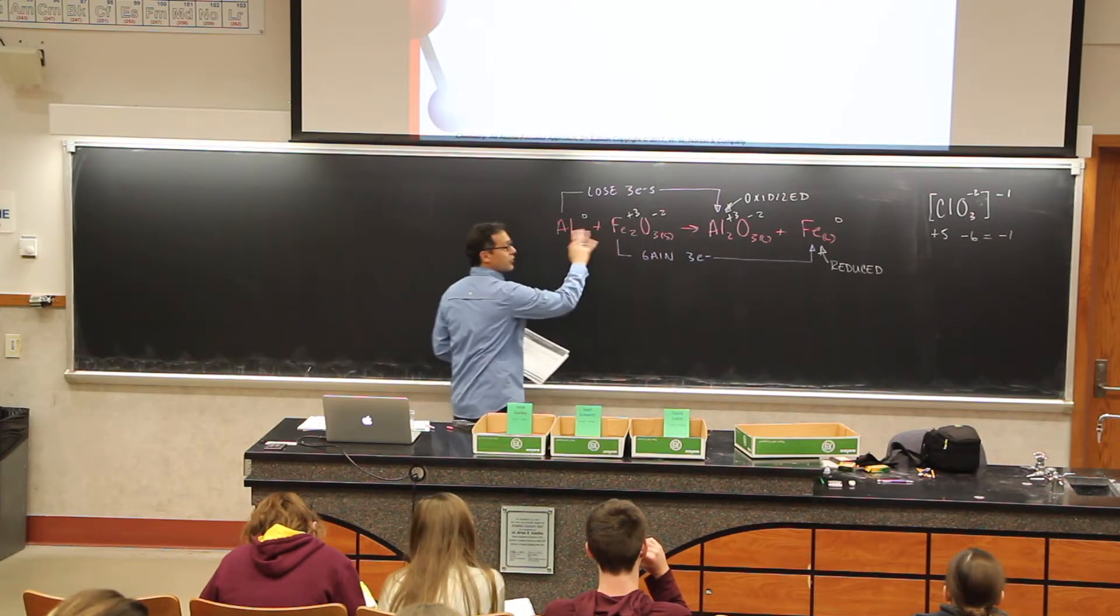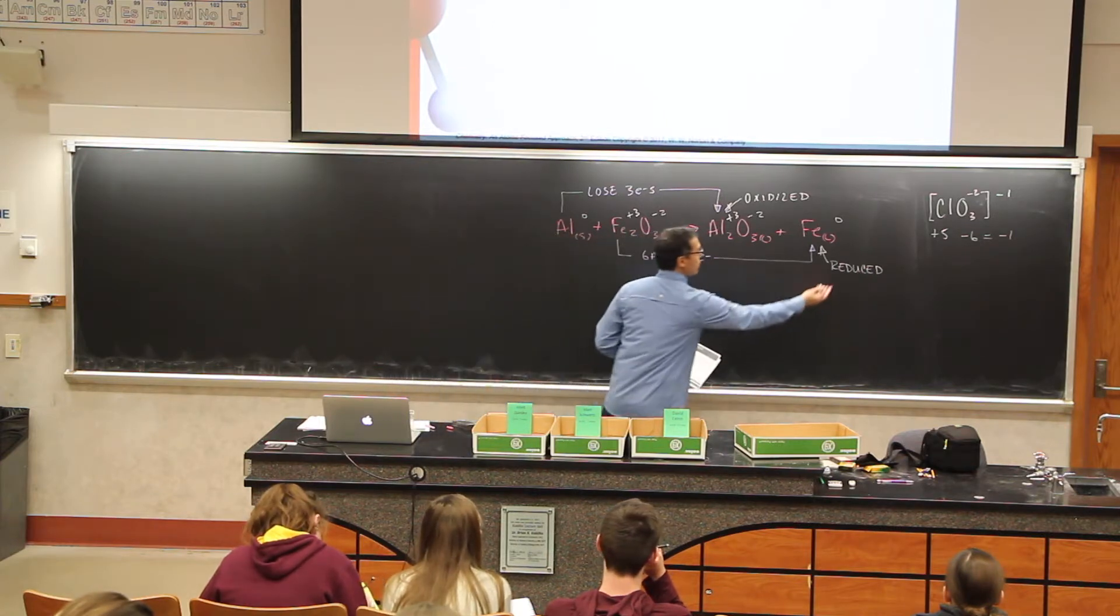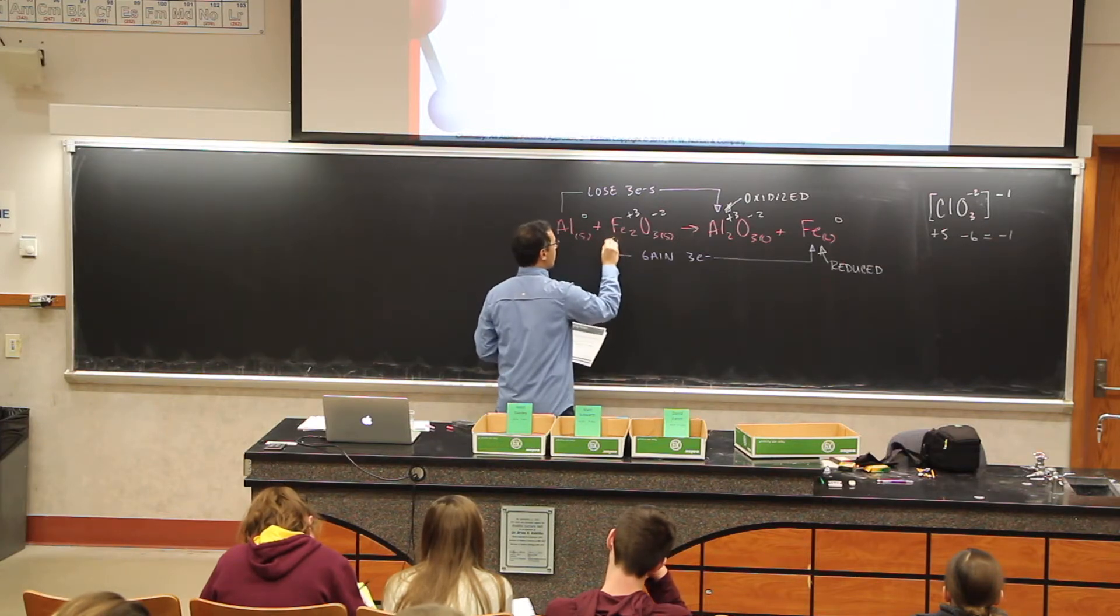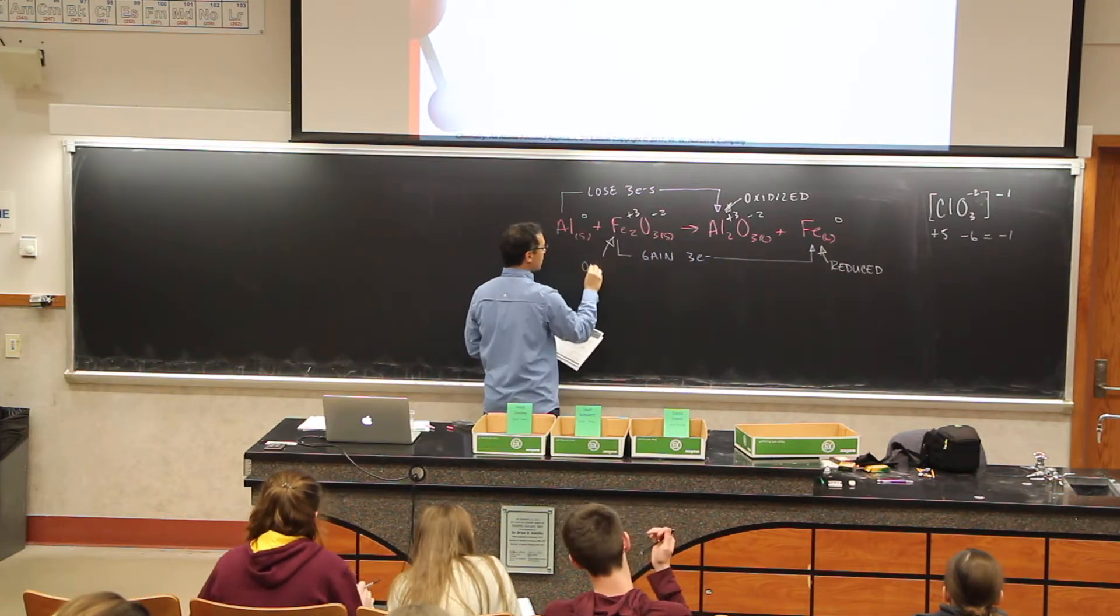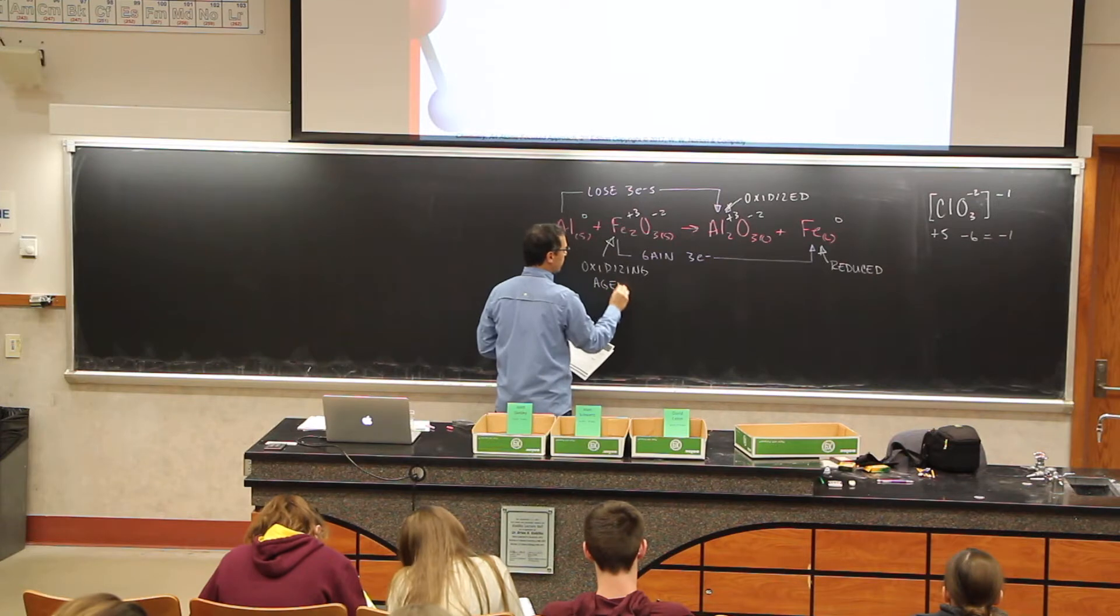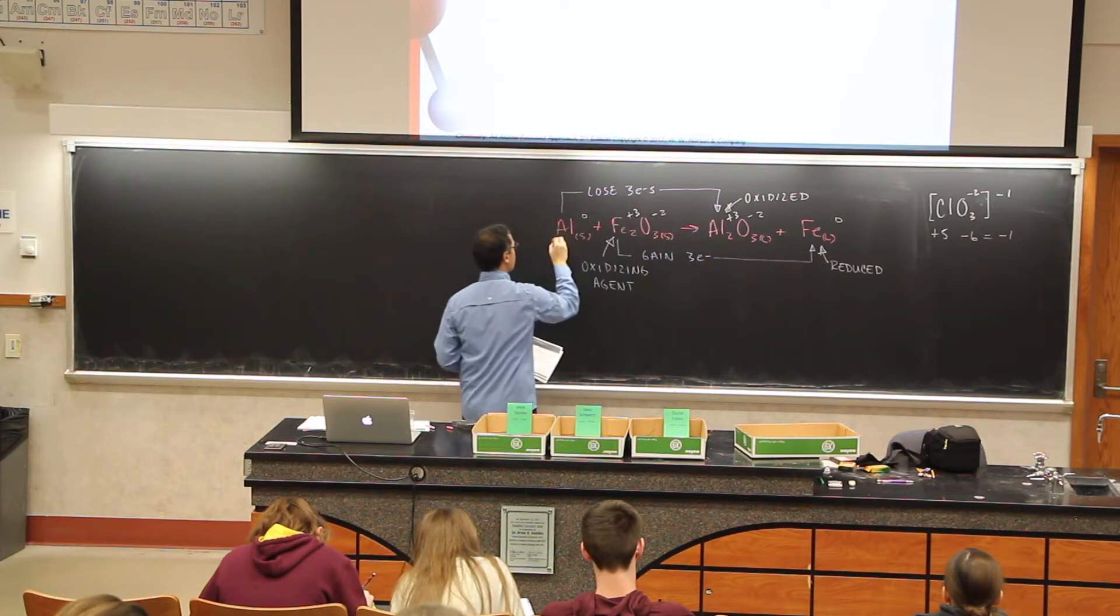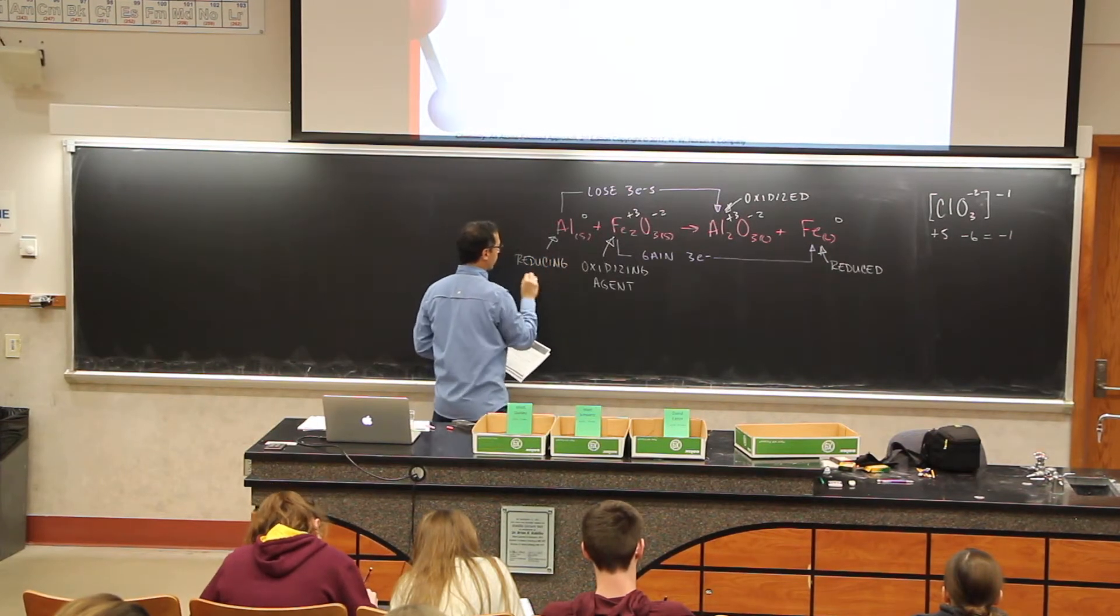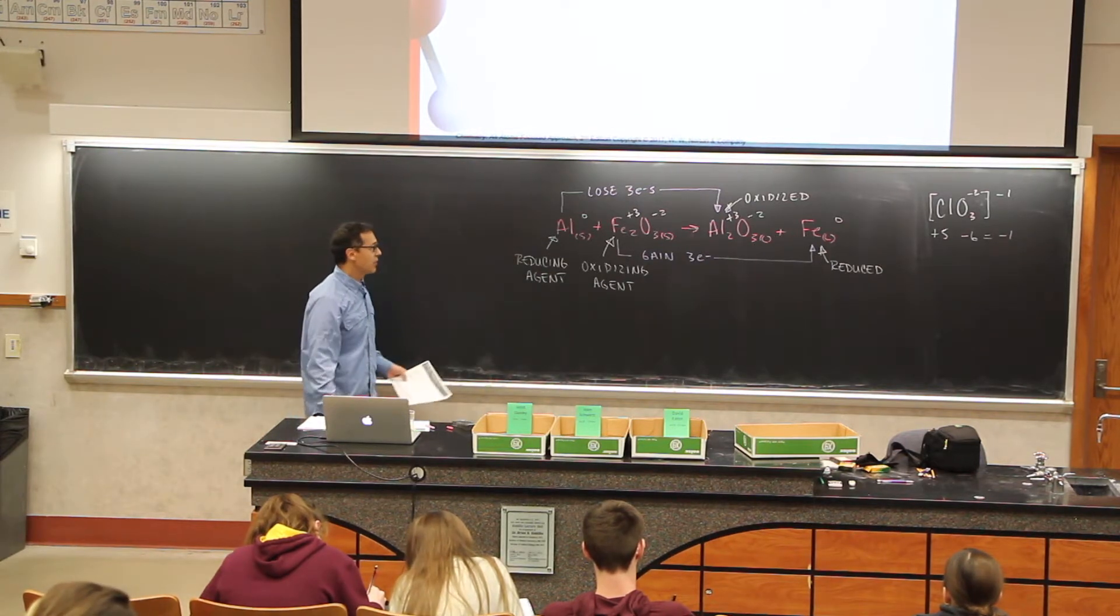Iron's been reduced, aluminum is the other thing that's been oxidized. Now these things on the other side of the equation they have their own special names as well. Whatever has been reduced here, on the opposite side here we would call this the oxidizing agent. And then this here, the aluminum, it was oxidized here. So on this side we will call this the reducing agent.